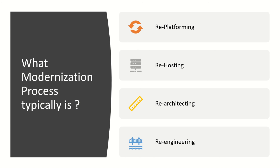When we talk about re-platforming, in technology this refers to the process of migrating existing applications and data from one technology platform to another, while maintaining the functionality and data structure of the legacy system. This strategy is often used when an organization wants to take advantage of newer technology that offers improved performance, scalability, and security. In re-platforming, we are completely migrating applications and data from one technology platform to another.